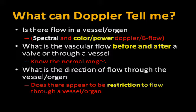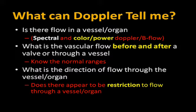What can my Doppler tell me? It can tell me if there's flow in a vessel or organ — you use spectral and color flow to evaluate that. It tells me the vascular flow before or after a valve or through a vessel. Know the ranges. We want to look at directional flow through the vessel and organ. The color will help us identify if the flow is moving in the proper direction, and it can help us assess for any restriction to flow through a vessel or organ.